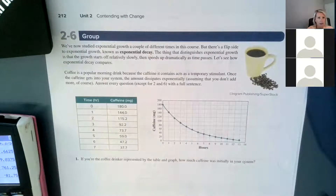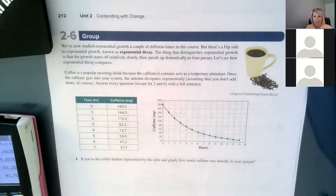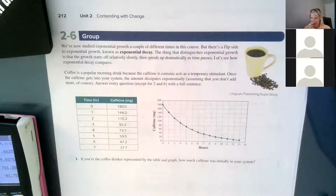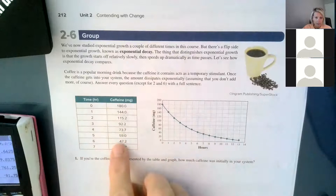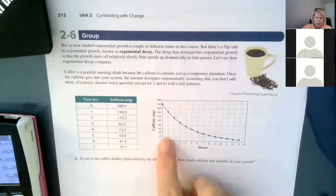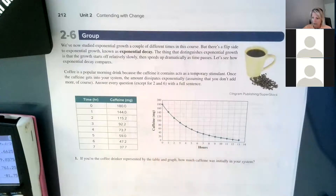Coffee is a popular morning drink because the caffeine it contains acts as a temporary stimulant. Once the caffeine gets into your system — I'm not going to lie, I've got a coffee here — the amount dissipates exponentially, assuming you don't add any more. Answer every question except 2 and 6 with a full sentence. Similar to before, they gave us time zero to seven hours showing the amount of caffeine we started with and what it was after seven hours. The graph goes from 0 to 13 hours even though the data only goes from 0 to 7.